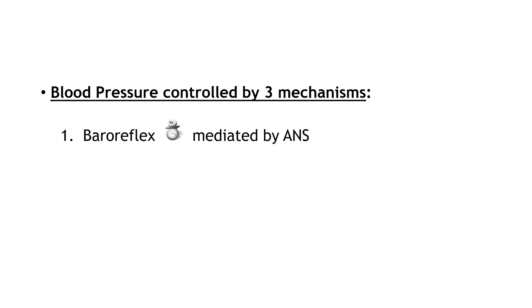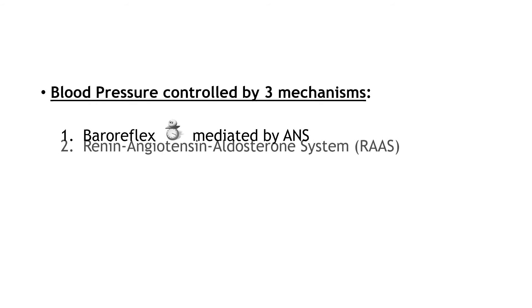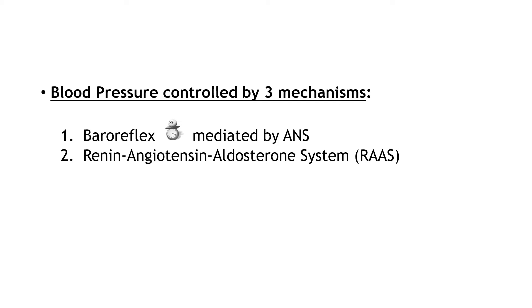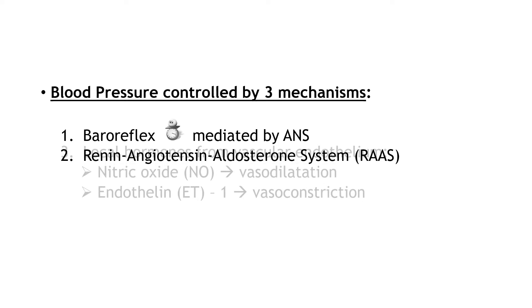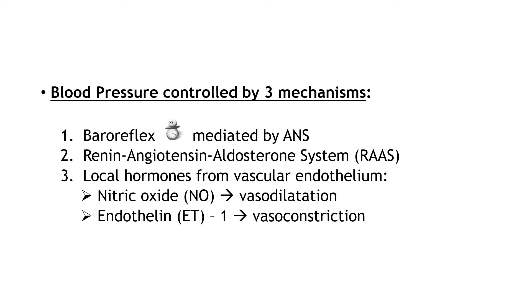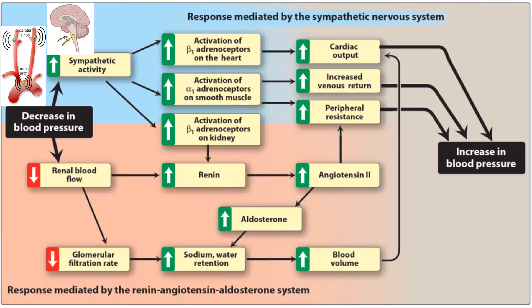There are three mechanisms in our body that control blood pressure. First is the baroreflex, mediated by the autonomic nervous system. Baroreceptors present on the aortic arch and carotid sinus sense increases or decreases in blood pressure and send messages to the medulla of the brain to control heart rate as well as blood pressure. Second is the renin-angiotensin-aldosterone system — whenever there is a fall in blood pressure due to reduction in blood volume or deficient sodium, this system is activated to increase blood pressure. Third are local hormones from vascular endothelium like vasodilatory nitric oxide and vasoconstrictor endothelin-1. The sympathetic nervous system and renin-angiotensin system are interconnected — whenever there is a fall in blood pressure, baroreceptors signal the brain to stimulate the sympathetic system.